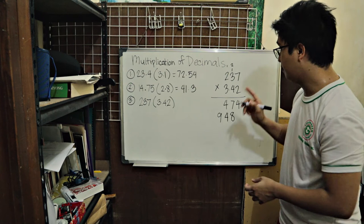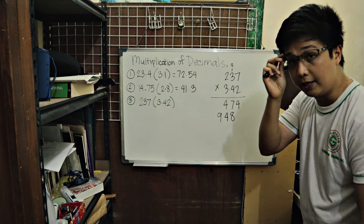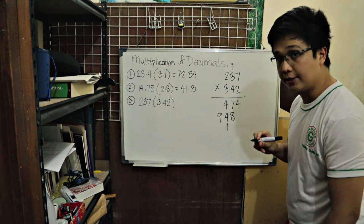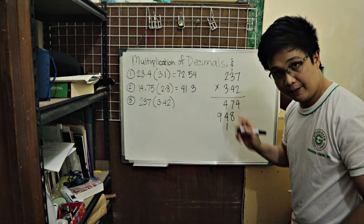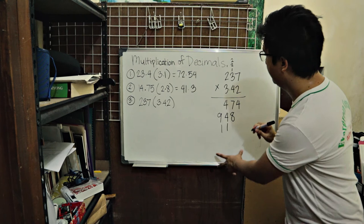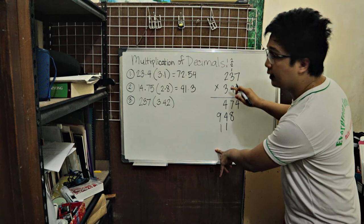And then one last. 3 times 7. 3 is in the hundreds place when you ignore the decimal point. So 3 times 7, 21. Ibutang in the hundreds place. So 21. 3 times 3 is 9. Plus 2, 11. So 1. Carry 1. 3 times 2 is 6. Plus 1, 7.